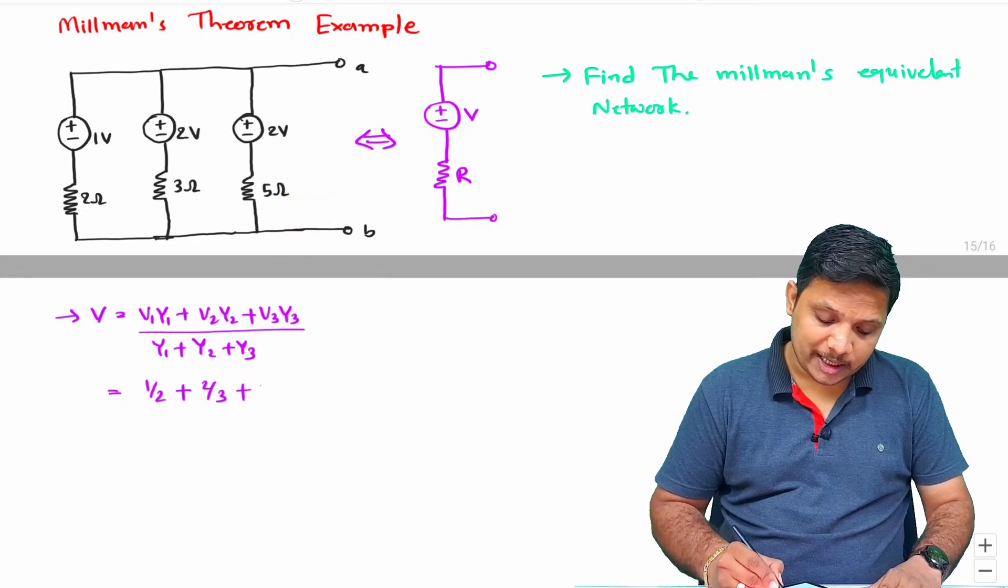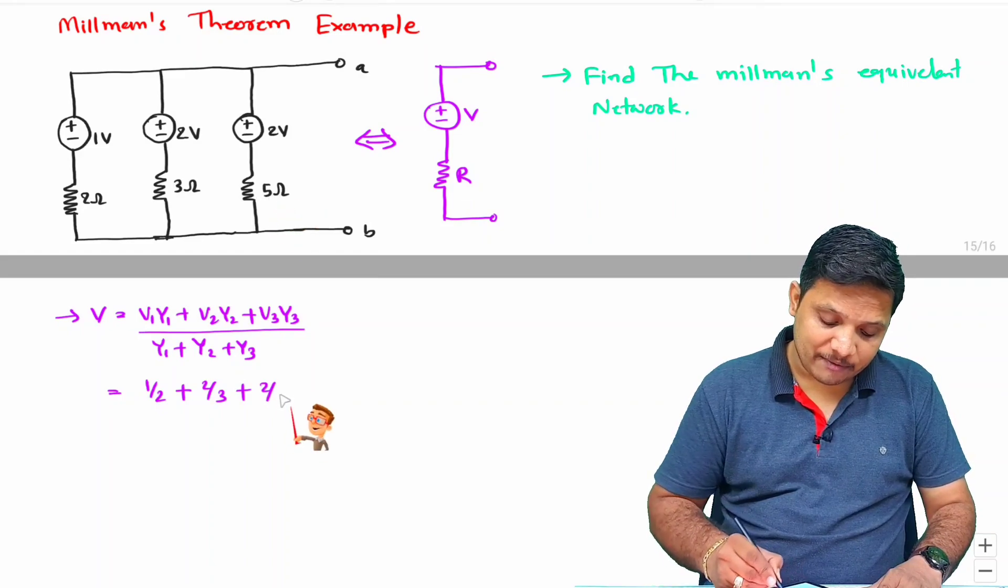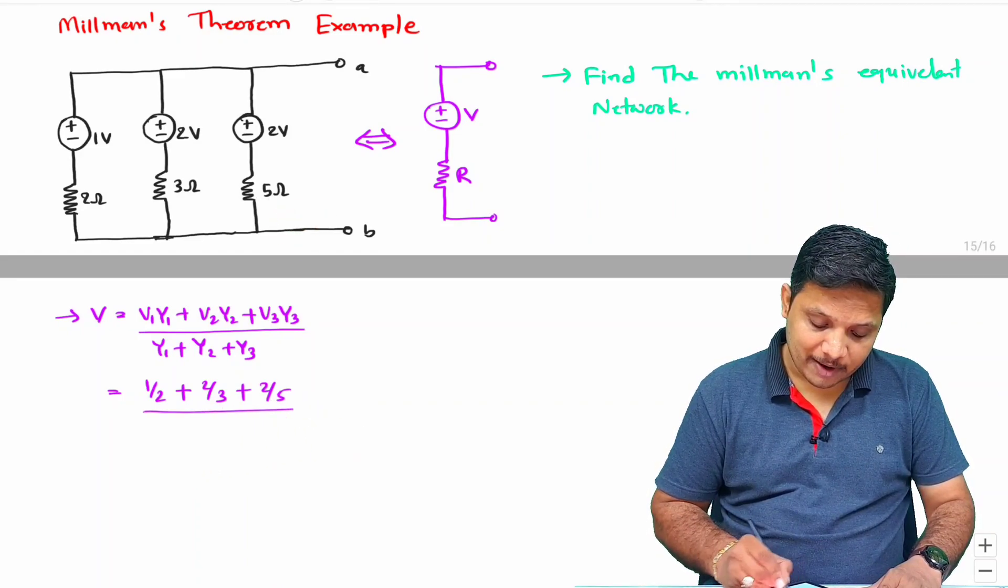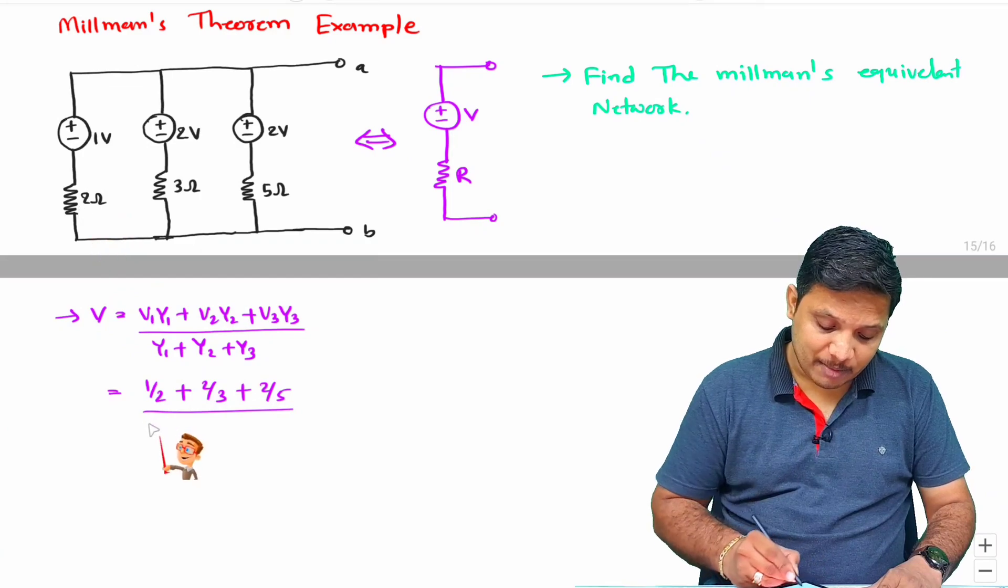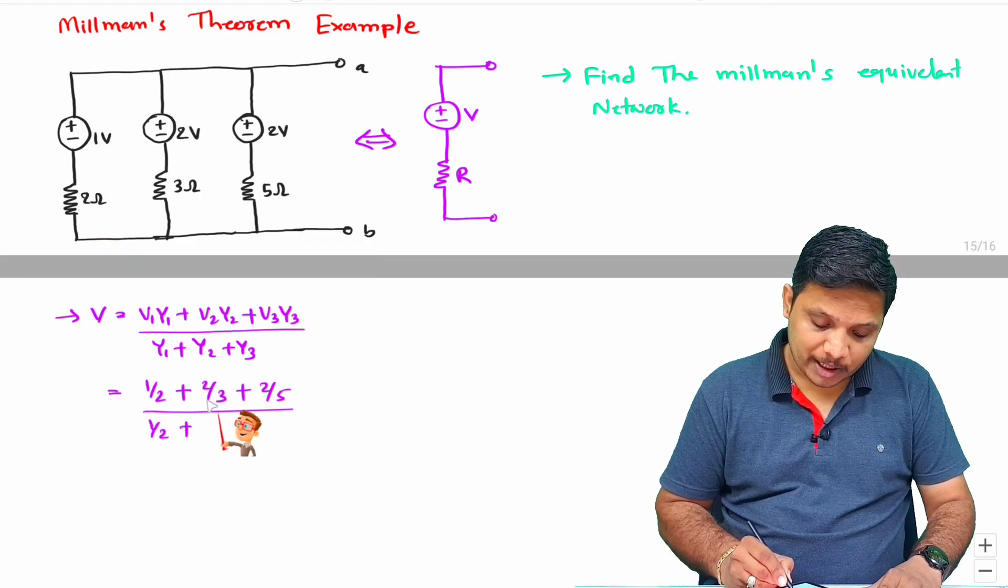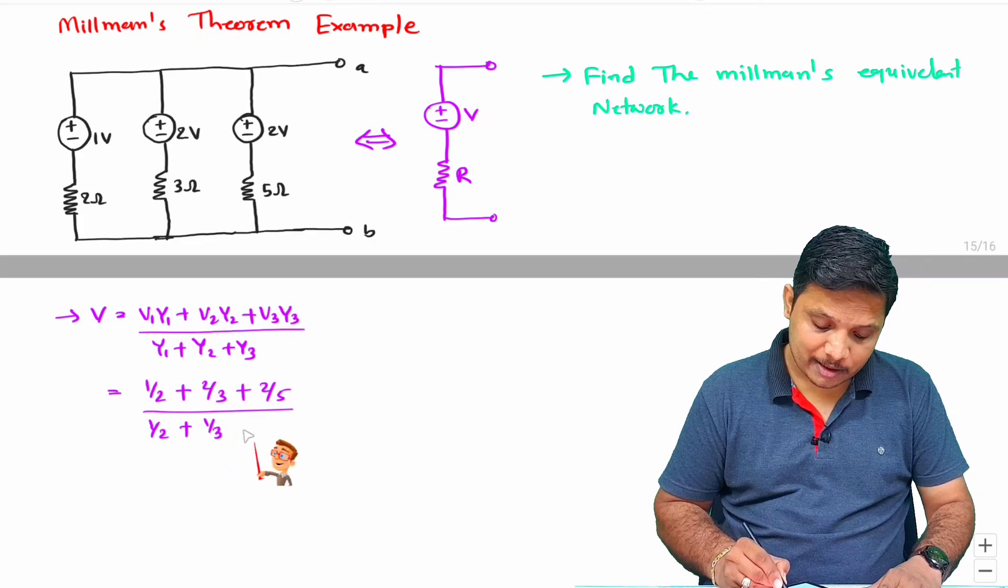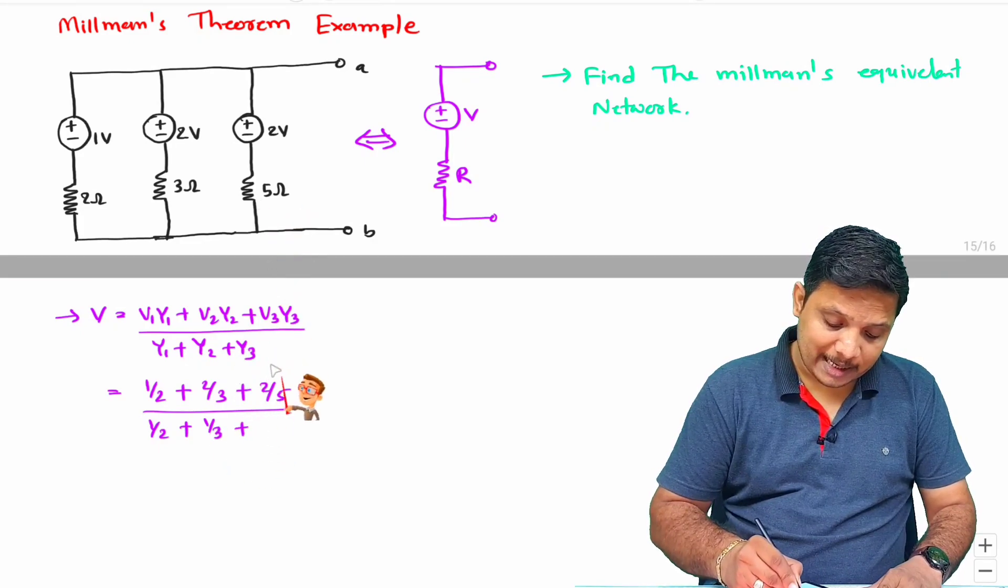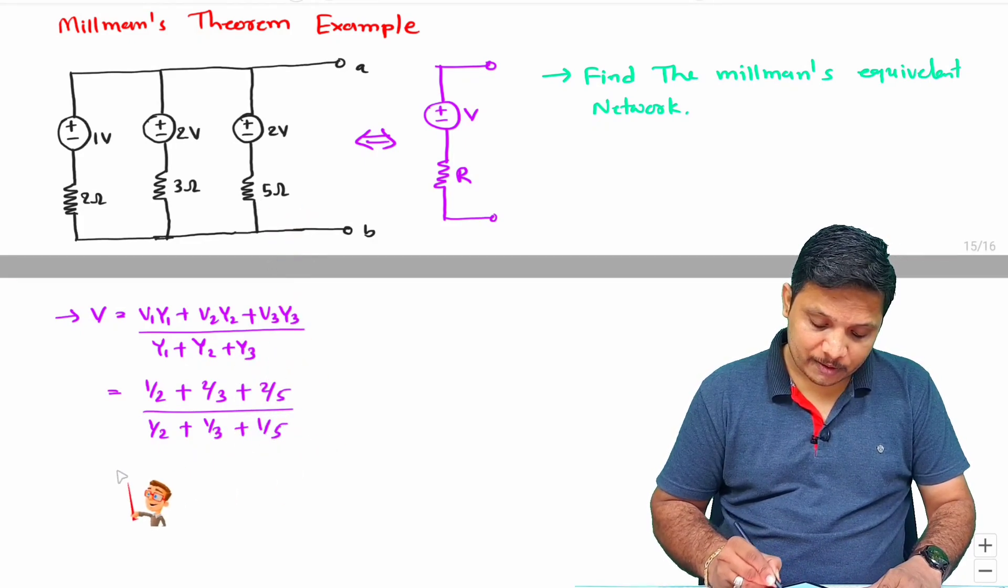What is V3? 2 voltage and Y3 is 1 by 5. Divide by Y1 that is 1 by 2 plus Y2 that is 1 by 3 plus Y3 that is 1 by 5.